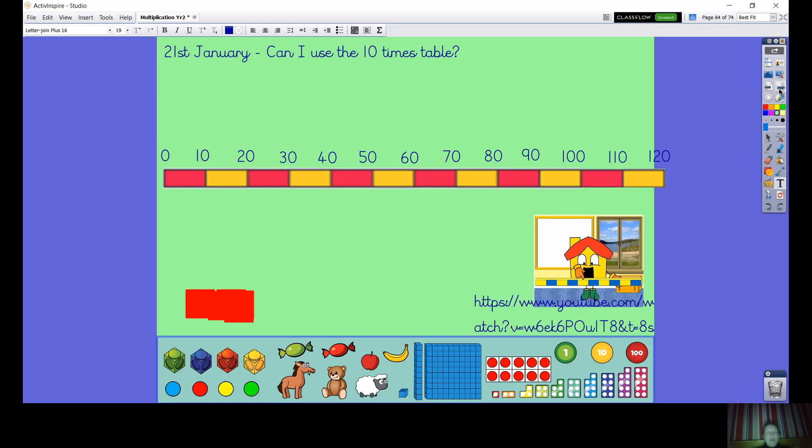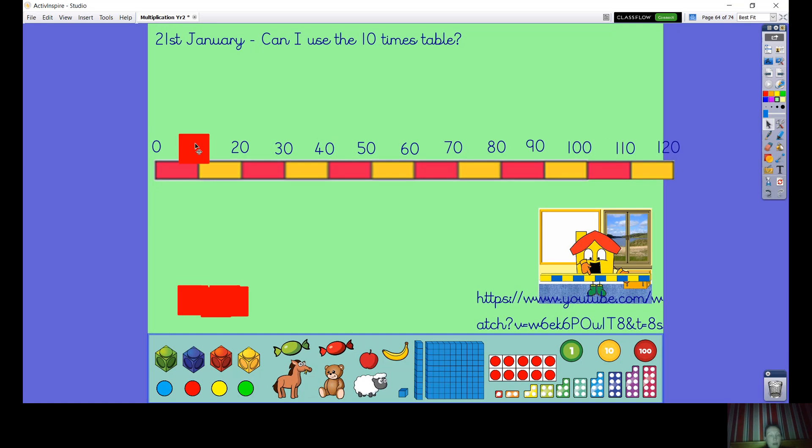Let's move on to learning our 10 times table and it's going to look really similar to our two times table. First of all, we're going to practice counting forwards and backwards in tens. Join in with me: 0, 10, 20, 30, 40, 50, 60, 70, 80, 90, 100, 110, 120.